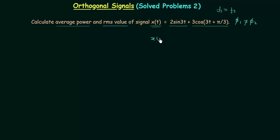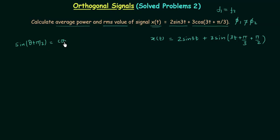I will modify signal xt as 2sin(3t) plus 3sin(3t + π/3 + π/2). We know that sin(θ + π/2) equals cos(θ). Using this, we can rewrite the second signal. From the first property, if we have same harmonics with different frequencies the two signals are orthogonal, but here frequencies are also the same. So the two signals are not orthogonal, and signal xt is not composed of two orthogonal signals.